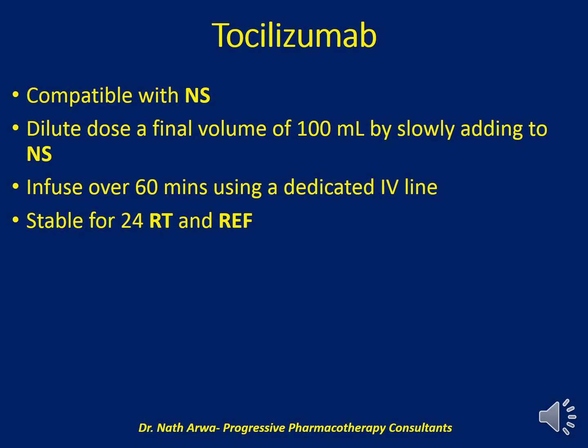Tocilizumab is compatible with normal saline. We should dilute the dose to a final volume of 100 ml by slowly adding it to normal saline. After adding and homogenizing, infuse the resultant solution over 60 minutes using a dedicated IV line. If other products must be administered using the same line, flush thoroughly with normal saline before and after tocilizumab administration. Such a diluted solution is stable for up to 24 hours at room temperature and under refrigeration.